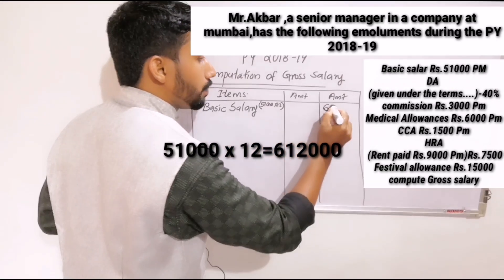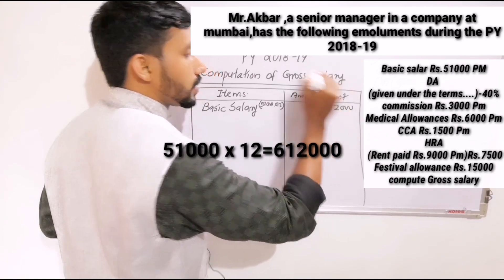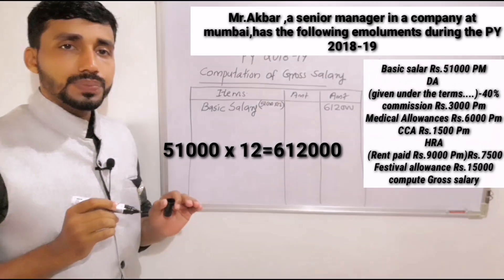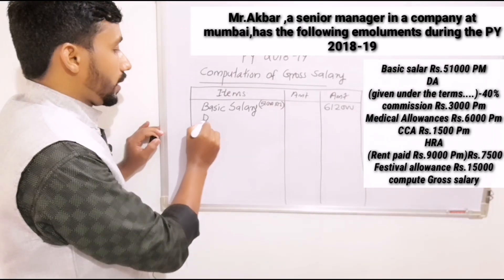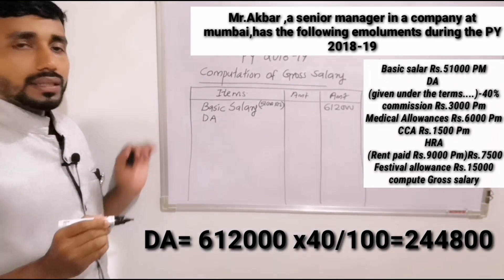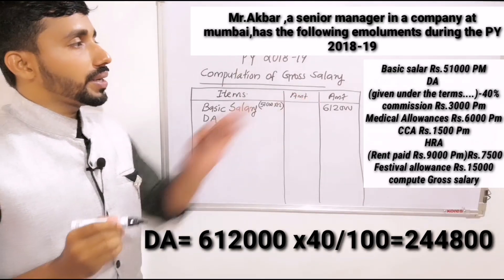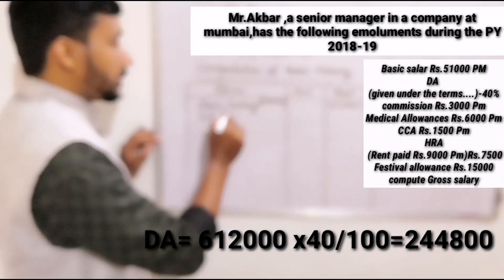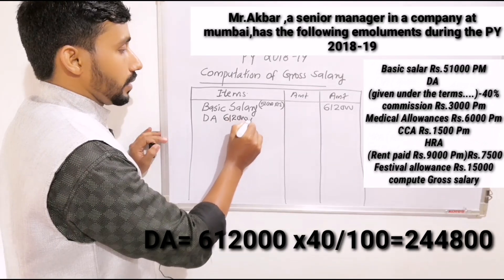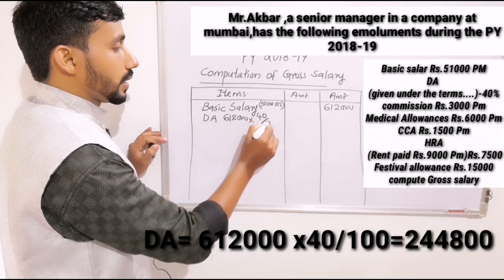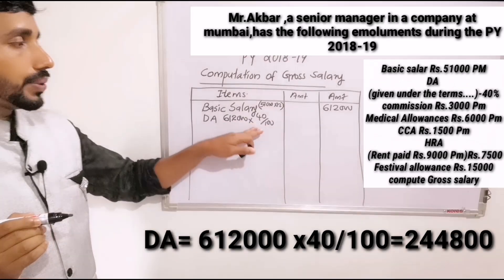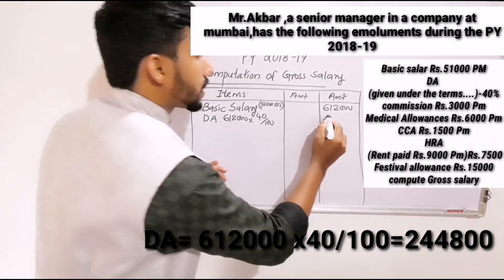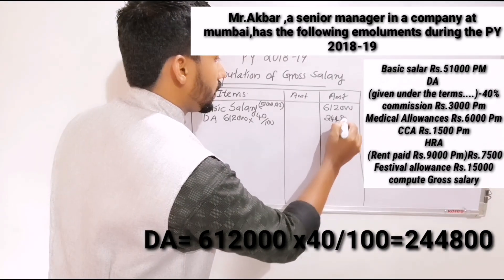The second item is DA. DA is 40% of salary. So $6,12,000 into 40 divided by 100 equals $2,44,800.